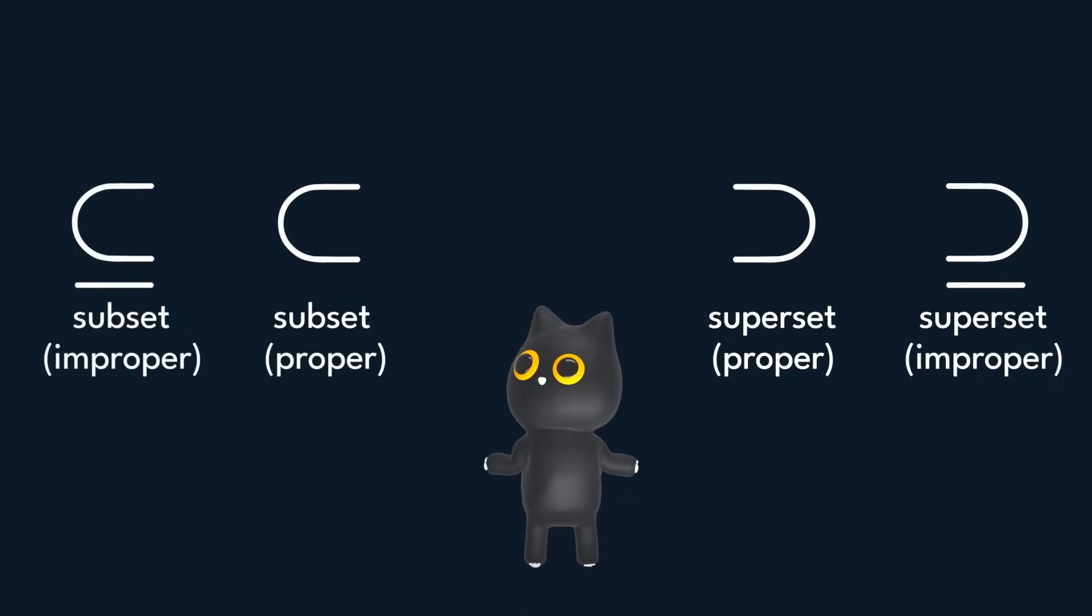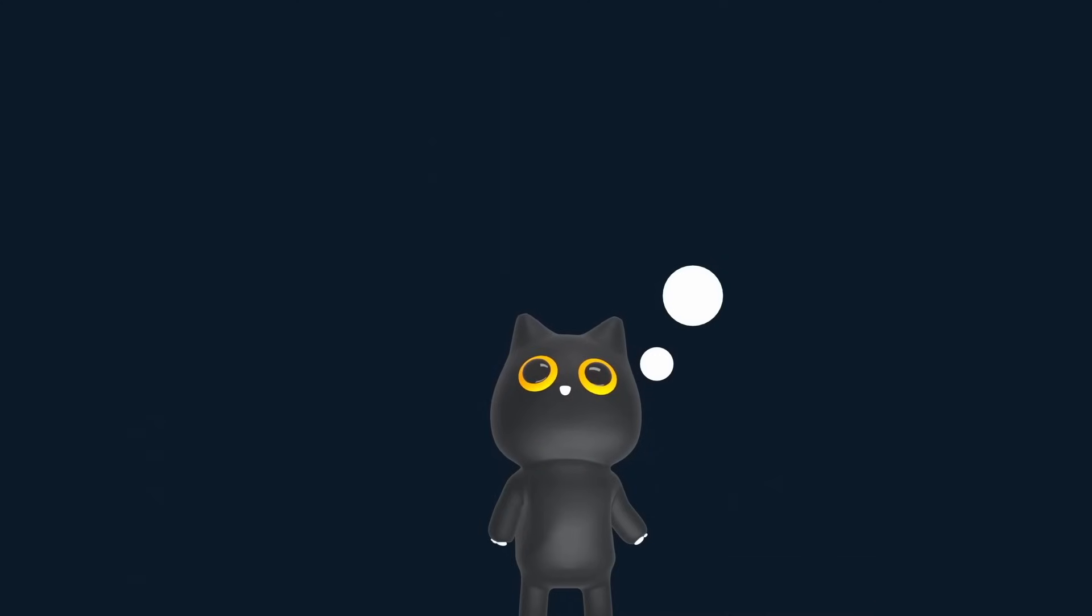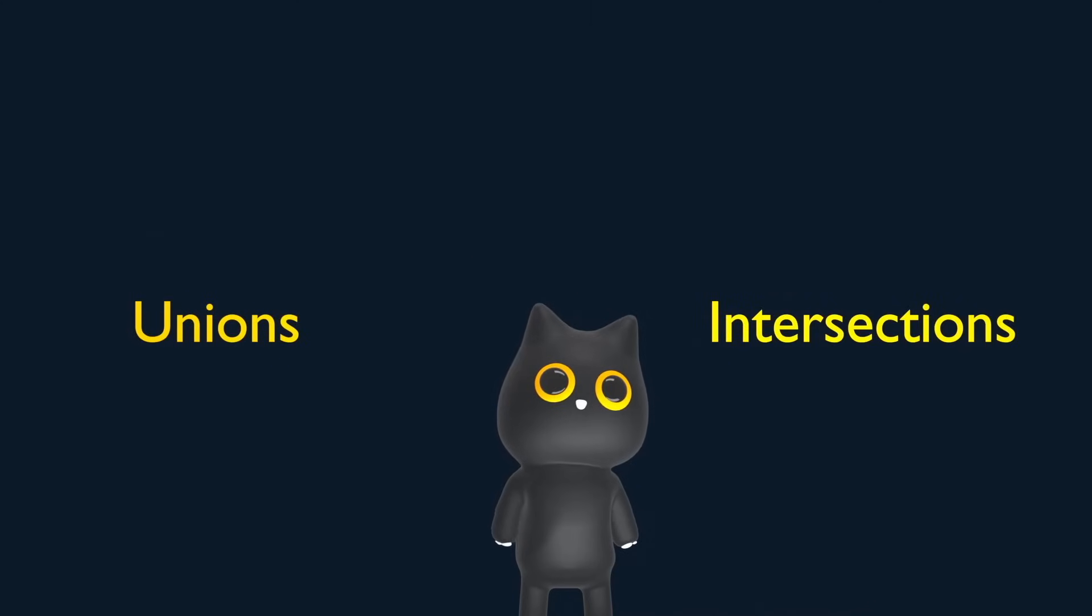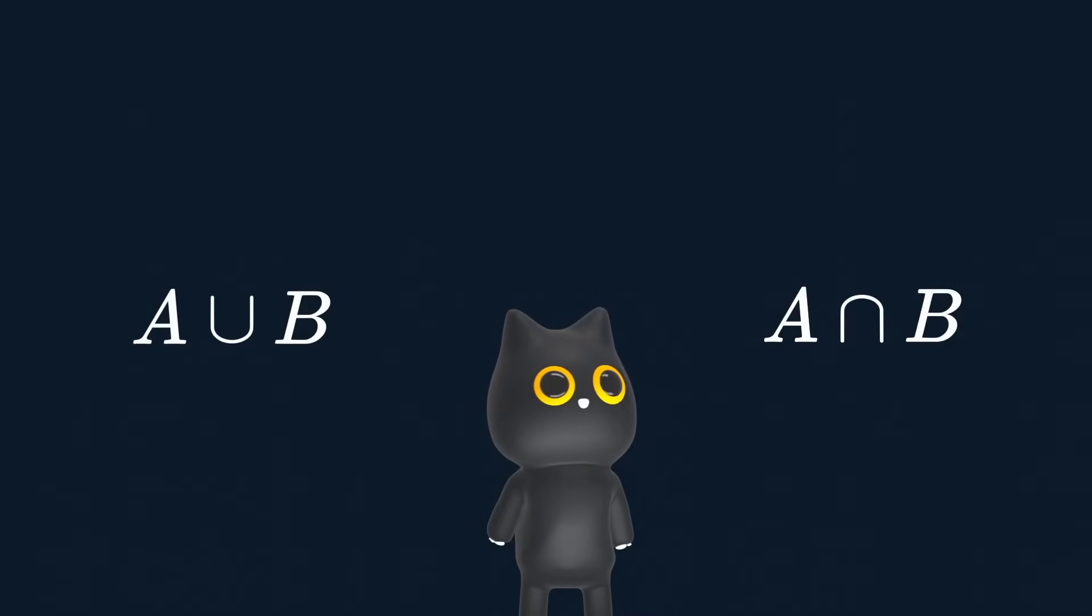We also have improper and proper subsets and supersets. The improper versions are basically proper ones, but include the possibility that both sets could be equal. But what if we want to connect multiple sets? Unions and intersections do the rescue. The U-looking thing joins the two sets together, and the upside-down U finds common elements for the two sets.